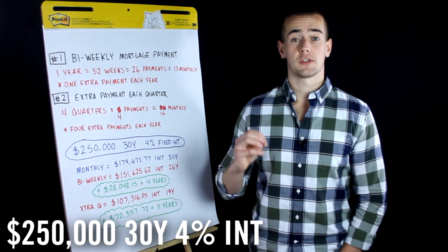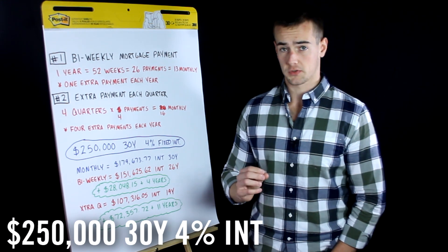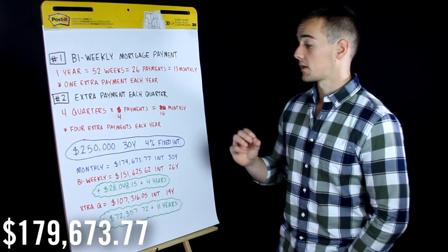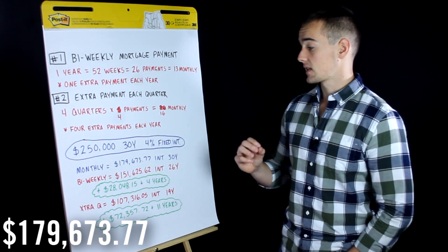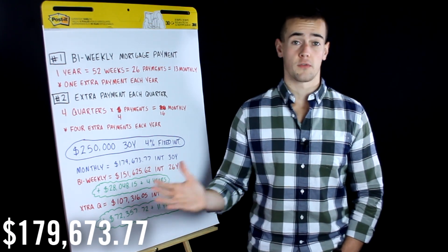So on a $250,000 mortgage at a thirty-year term with a 4% fixed interest rate, if you're paying that mortgage off monthly over thirty years, you would be paying $179,673.77 in interest over that course of thirty years.